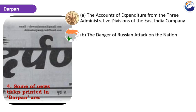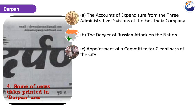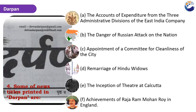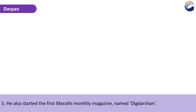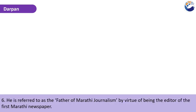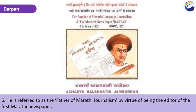Other topics covered in Darpan included the danger of a Russian attack on the nation, appointment of a committee for cleanliness of the city, remarriage of Hindu widows, the inception of theatre at Calcutta, and achievements of Raja Ram Mohan Roy in England. Bal Shastri Jambhekar also started the first Marathi monthly magazine named Dikdarshan. He is referred to as the father of Marathi journalism by virtue of being the editor of the first Marathi newspaper.